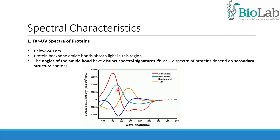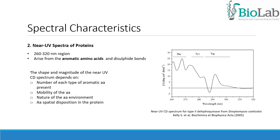Beta sheets exhibit a broad negative band near 218 nm and a large positive band near 195 nm, while disordered extended chains have a weak broad positive CD band near 217 nm and a large negative band near 200 nm. The near UV CD of proteins arises from the environments of each aromatic amino acid side chain, as well as possible contributions from disulfide bonds or non-protein cofactors, which might absorb in the spectral region comprised between 260 and 320 nm. Each of the aromatic amino acids tends to have a characteristic wavelength profile, and the shape and magnitude of the near UV CD spectrum depends on the number of each type of aromatic amino acid present, the mobility of the amino acid, the nature of the amino acid environment, and the amino acid spatial disposition in the protein.